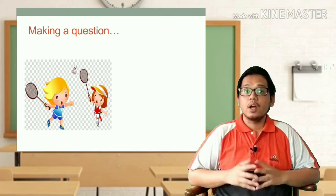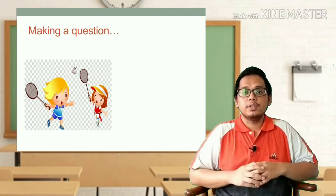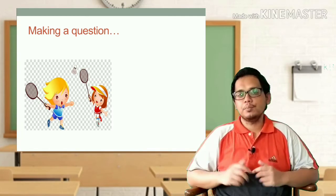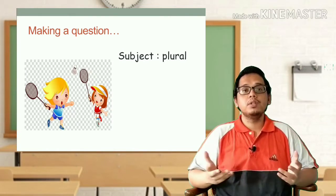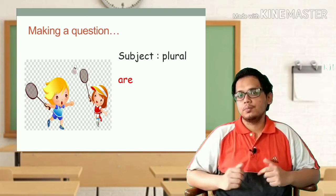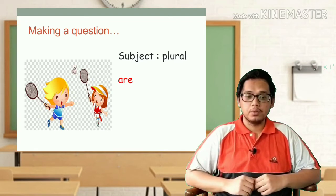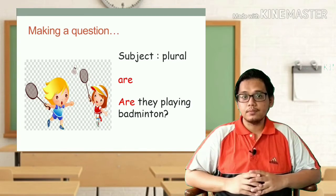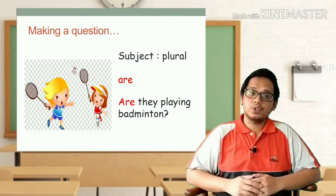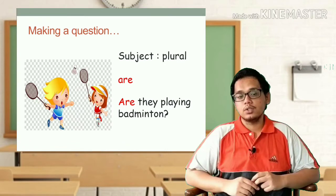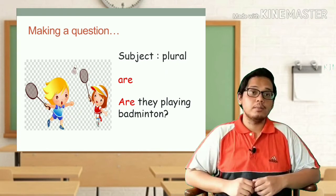Look at the picture now. How many persons did you see in the picture? Yes, two persons in the picture. So the subject in the picture is plural because there are two persons, and plural means many. So when the subject is plural, we must use 'are'. For example: Are they playing badminton? 'Are' is in front of the question, followed by the subject. In the picture we see two girls are playing, so we use the personal pronoun 'they' — Are they playing badminton?